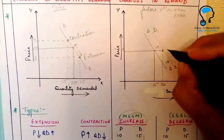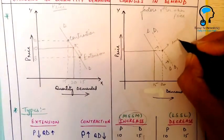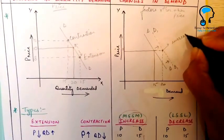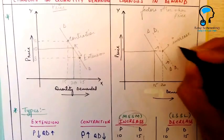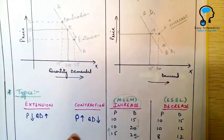When the demand curve shifts towards the right, it shows an increase in demand. Now what happens when the demand decreases?